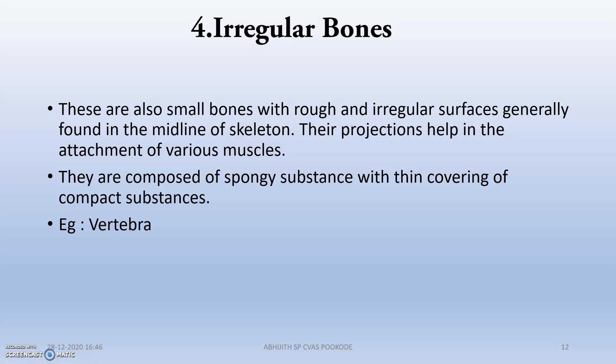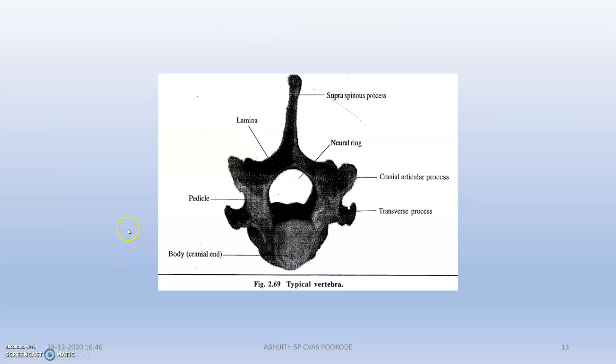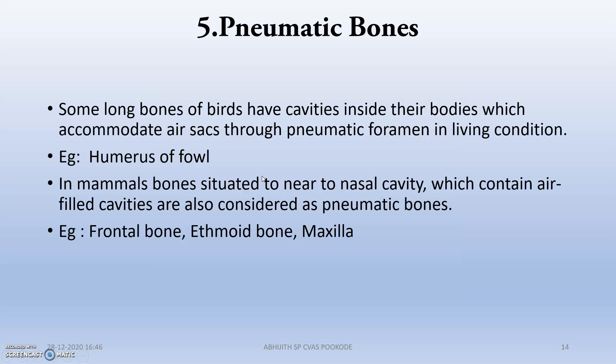Next are irregular bones. These are small bones with rough and irregular surfaces, generally found in the midline of the skeleton. They are actually the vertebrae — this image shows a typical vertebra.